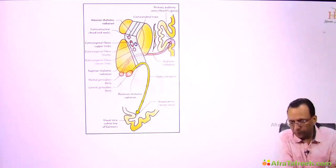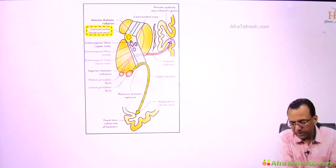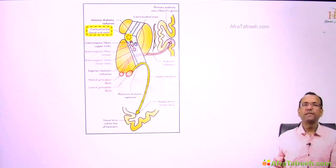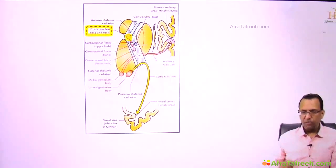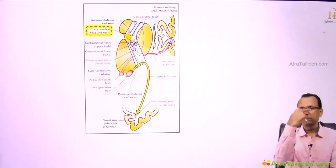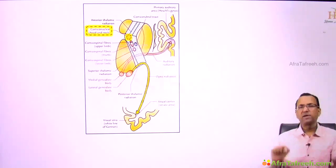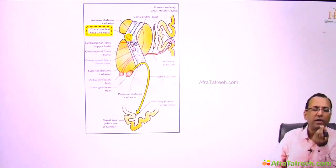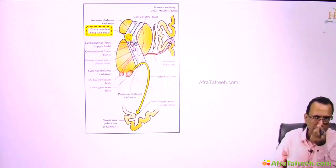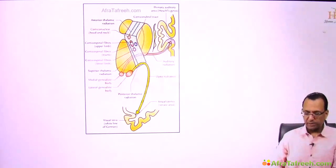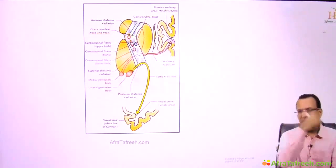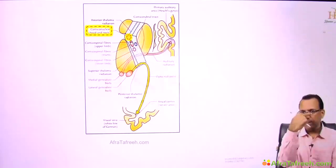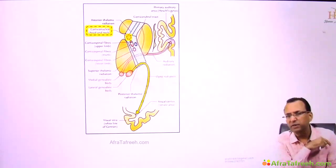The corticonuclear tract passes through the genu of the internal capsule. It is part of the pyramidal system and moves the face muscles, like the eye muscles. Remember the analogy of putting a thread into a needle — to do that, you have to look at the eye of the needle, and you move your eyes using the corticonuclear tract, which passes through the genu.